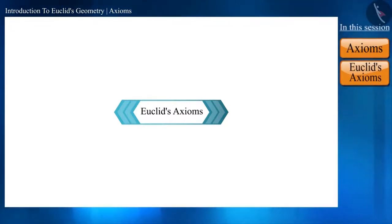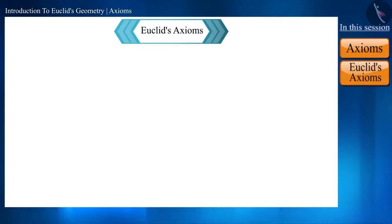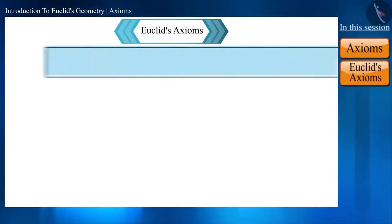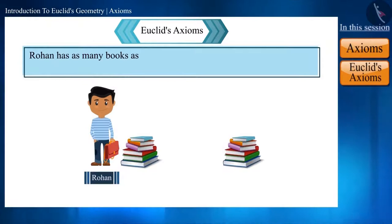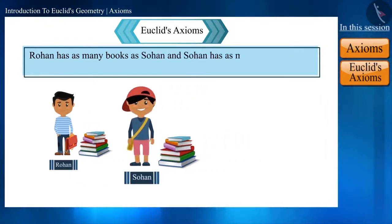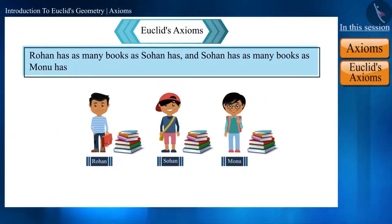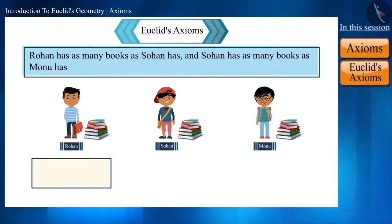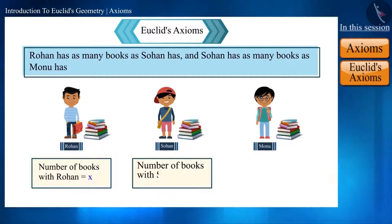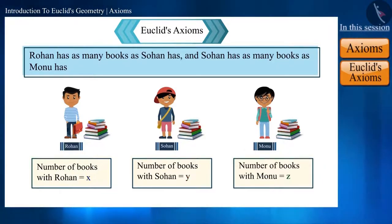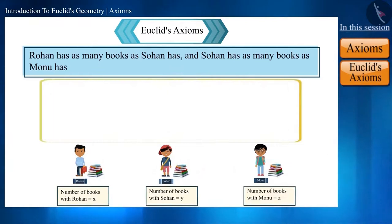Let's start with a statement: if I say Rohan has as many books as Sohan, and Sohan has as many books as Monu, friends can we determine the relationship between Rohan and Monu with this statement? Let's see. Suppose Rohan has x number of books, Sohan has y number of books, and Monu has z number of books.